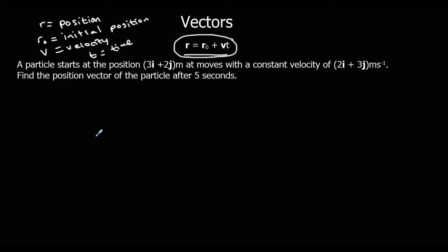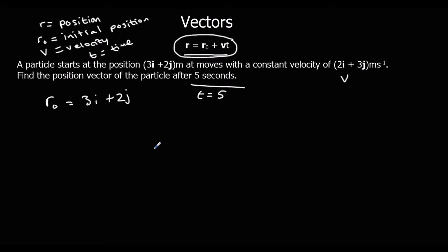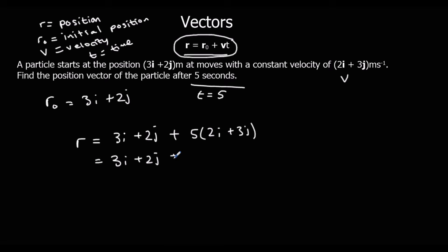Here's a question. A particle starts at 3i plus 2j — so 3i plus 2j is our initial position. It moves at constant velocity 2i plus 3j, and we need to find the position vector after 5 seconds, so t is 5. The position r is given by r₀ plus vt, so 5 times the velocity. We expand the bracket, which gives us 10i plus 15j.